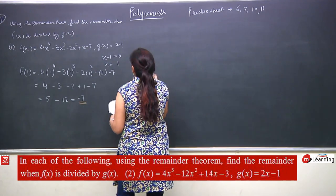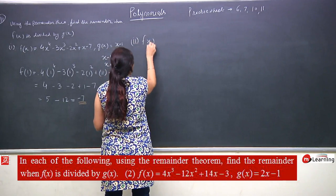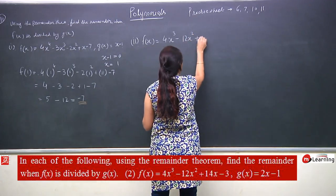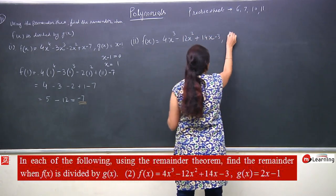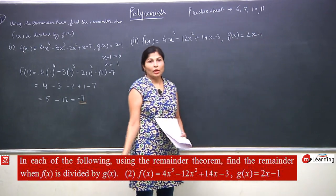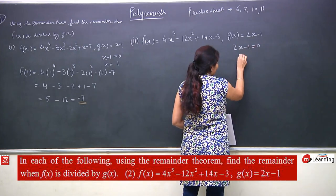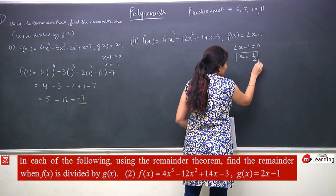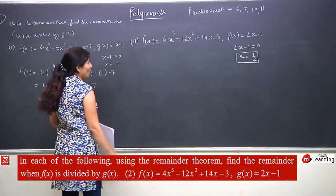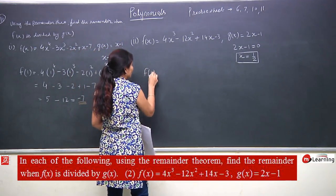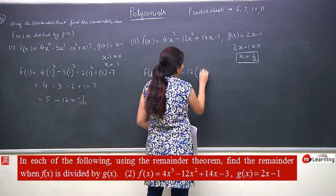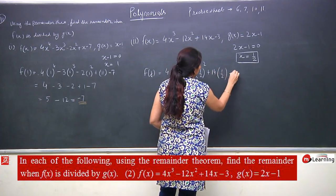Now the second part of the same question. Here f(x) is divided by g(x) equals 2x minus 1. Using the same procedure: 2x minus 1 equals 0, so x equals 1/2. At x equal to 1/2, we will check what remainder is left. In place of x, I will put 1/2.